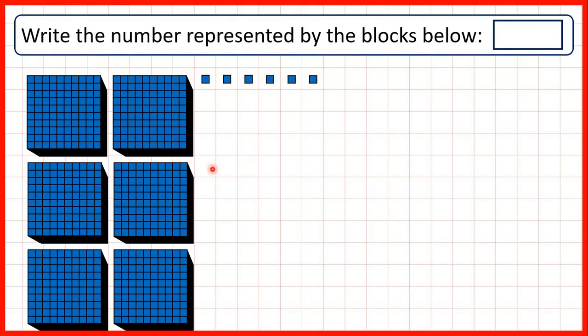And finally, for this number here, we have six thousands. We don't have any hundreds. We don't have any tens. And we have six ones. So we have the number six thousand and six.